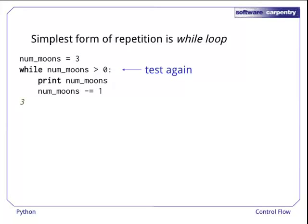Python then rechecks the condition. It's still true, so the program prints 2 and subtracts 1 from nummoons again. Another check, another print statement, the program prints 1 then decrements nummoons again. Since the loop's controlling condition is now false, the program is done.